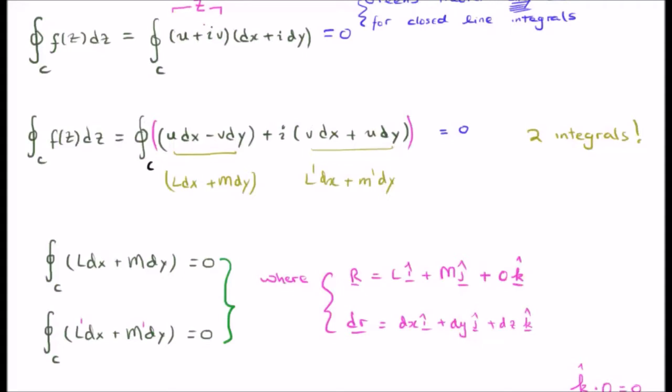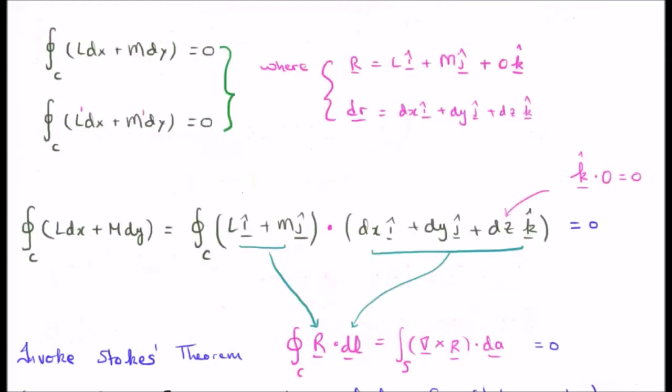dr is of course dx i hat plus dy j hat plus dz k hat. Let's first look at the closed line integral of l dx plus m dy. This can easily be rewritten as a dot product of l i hat plus m j hat with dr, and that's because k hat dot zero is equal to zero. You could have n k hat here if you wanted where n is equal to zero.